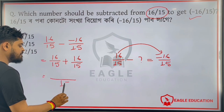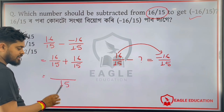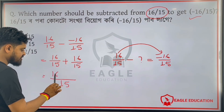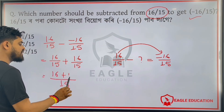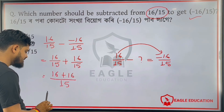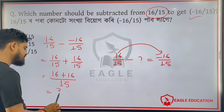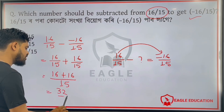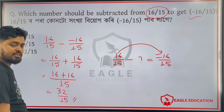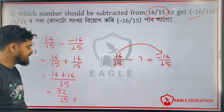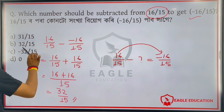If we take 16 by 15 as a factor, 16 plus 16 gives us 32. So 16 by 15 plus 16 by 15 equals 32 divided by 15. The answer is 32 divided by 15.